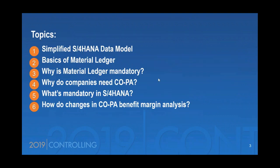First of all, we're going to look at the simplified data model — you might have heard this term before. We'll talk about the three pieces of material ledger. A lot of people think of material ledger as actual costing, but there are actually three different things there. And then we'll cover why SAP made it mandatory — I think once you see what's so great about it, it'll make sense.